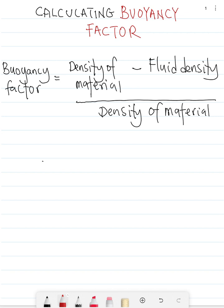A quick definition: the buoyancy factor is a dimensionless number that quantifies how much the weight of an object is reduced when submerged in a fluid.